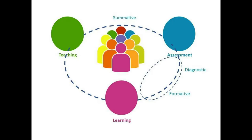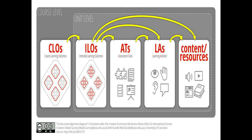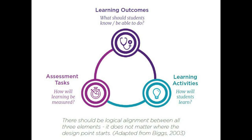Biggs and Tang, 2010, added that constructive alignment starts with clearly stating not what the teacher is going to teach, but what the outcome of that teaching is intended to be. This is expressed as the intended learning outcome (ILO), which is a statement of what the learner is supposed to be able to do and at what standard.